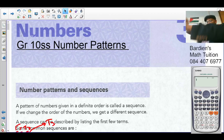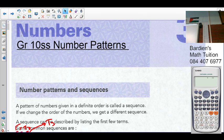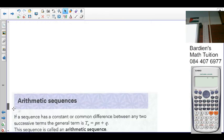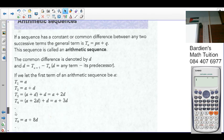Okay, good morning class. Today we're looking at number patterns, specifically examples for exercise 3.3 on arithmetic sequences. If a sequence has a constant or common difference between any two consecutive terms, the general term is Tn = pn + q. The sequence is called an arithmetic sequence, also known as a linear sequence.